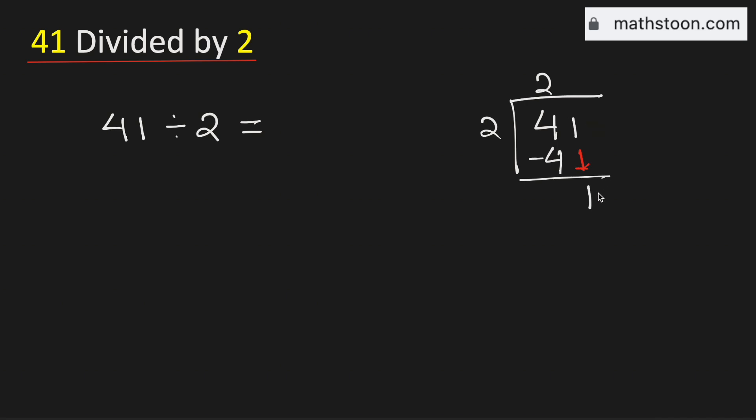As we have brought down the number 1 here, so we need to divide it. We know that 2 times 0 is 0. Now subtract we get 1.